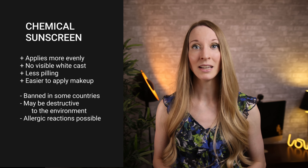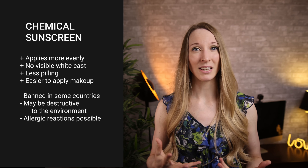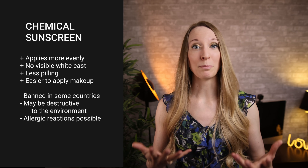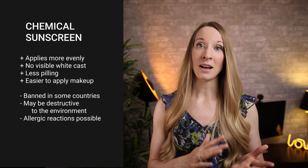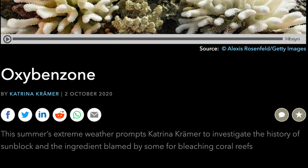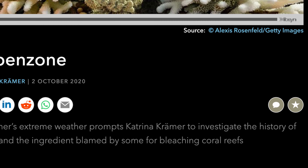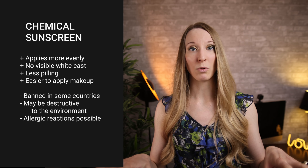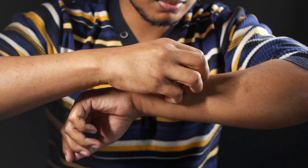The advantages of chemical sunscreens are that they apply more evenly, don't leave a white cast, don't pill, and are easier to apply makeup on top of. On the downside, some chemical sunscreen ingredients are banned in certain places — for example, oxybenzone is banned in Hawaii because it may contribute to coral reef bleaching as it leaches into the water. Another concern is that some people don't like the idea of applying chemicals to the body in large amounts, and some people can develop allergic reactions to certain chemical sunscreen ingredients.